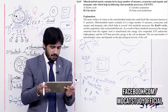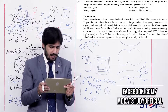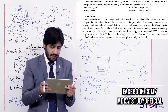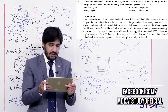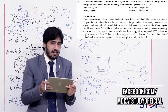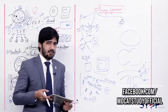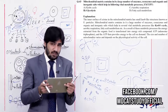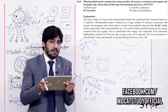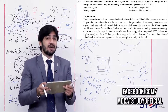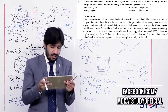Question 43: Mitochondrial matrix contains enzymes, coenzymes, and organic and inorganic salts which help in all the following vital metabolic processes except — (alpha) Krebs cycle, (beta) glycolysis, (charlie) aerobic respiration, (delta) fatty acid metabolism. The mitochondrial matrix is involved in the Krebs cycle, aerobic respiration, and fatty acid metabolism. However, glycolysis occurs within the cytoplasm and its enzymes are also located there. So the right answer is beta — glycolysis.